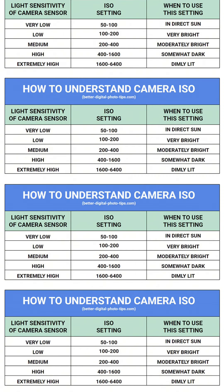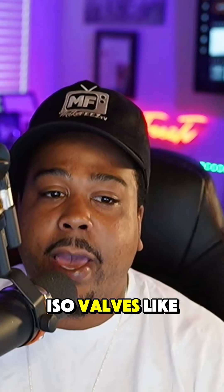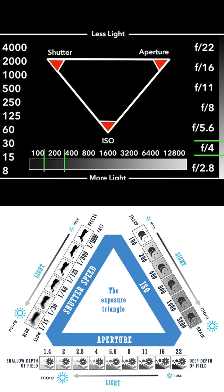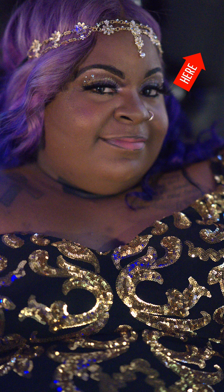Number three, you have your ISO settings. These adjust your camera's sensitivity to light. ISO values like 100 give you cleaner images, while higher ISOs like 3200 let you shoot in low light but introduce a little noise — they call that grain.